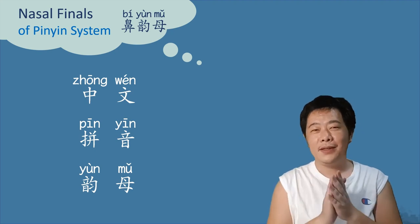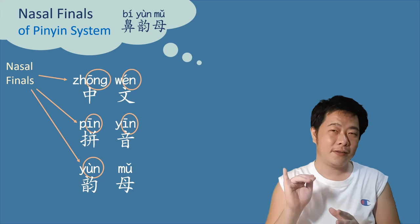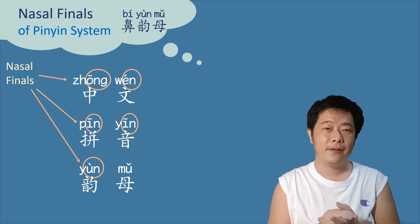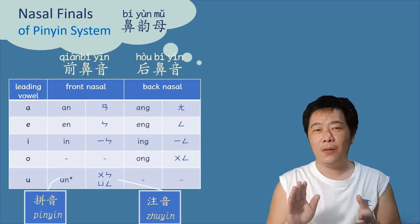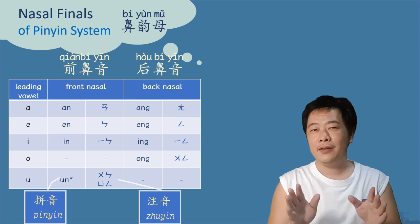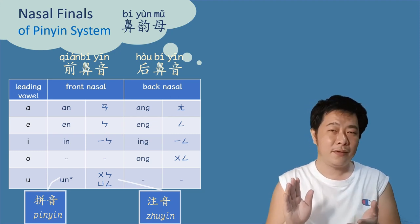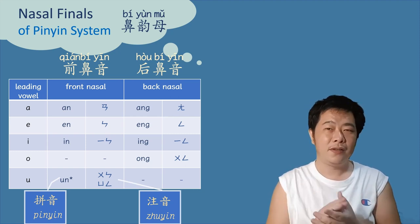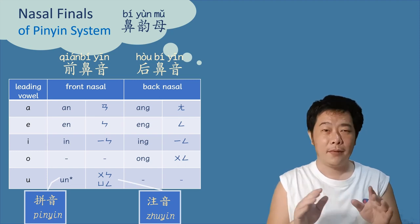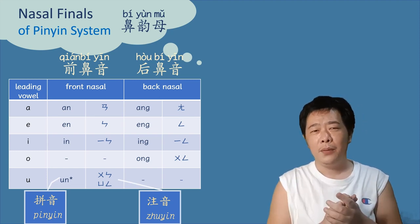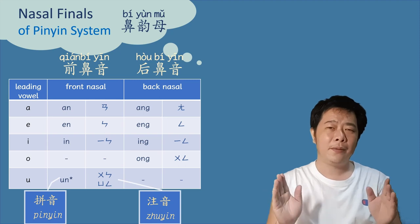Can you believe it? There are five nasal finals in this short six-character phrase. The N-ending ones are called 前鼻音, front nasal, while the NG-ending ones are called 後鼻音, back nasal. As a matter of fact, we're already using both of them in English.